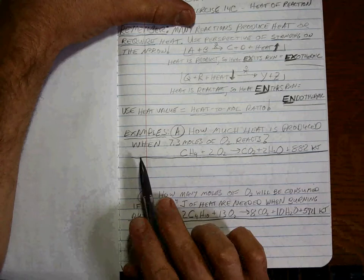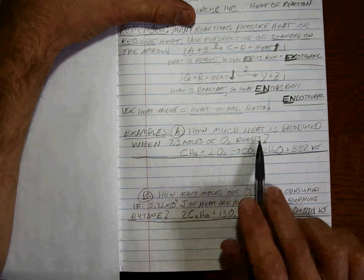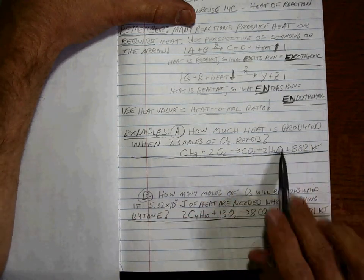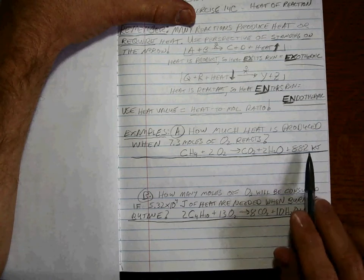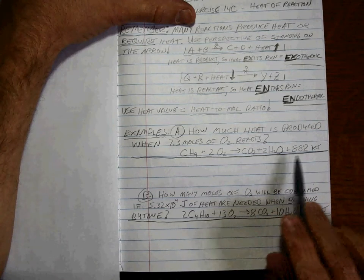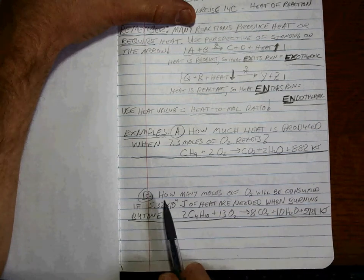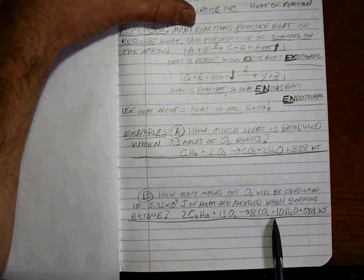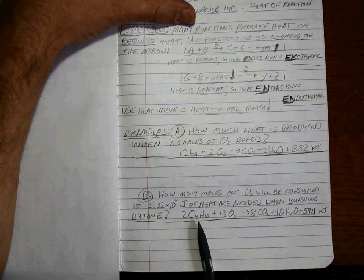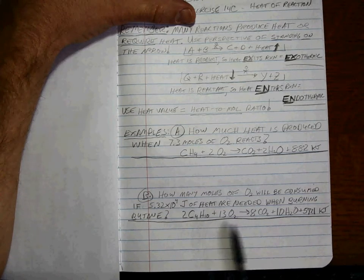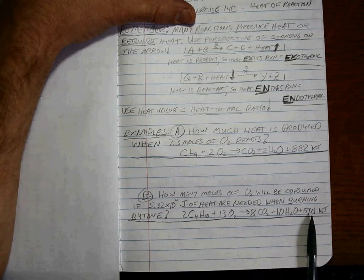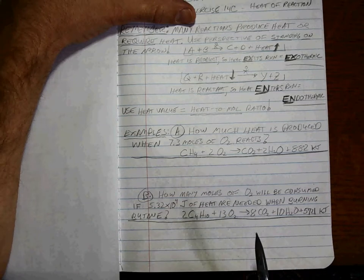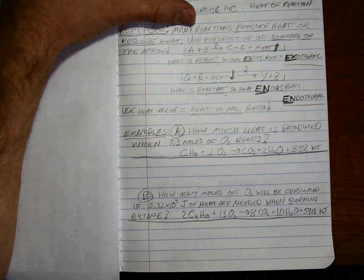How much heat is produced when 7.3 moles of O2 reacts? There's the reaction, there's the heat. So this is an exothermic reaction because heat is produced. And down here, how many moles of O2 will be consumed if this much heat is needed to burn some butane? Same kind of reaction. You have to do a heat-to-mole ratio. Hit pause, try it. We'll come back and give it a go.